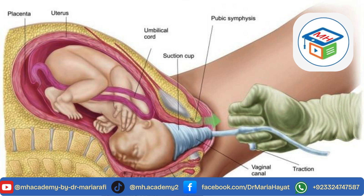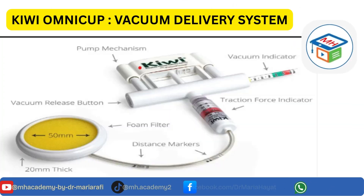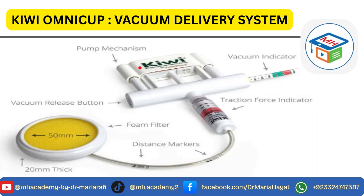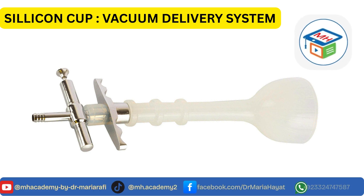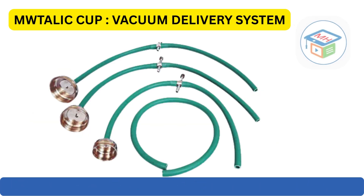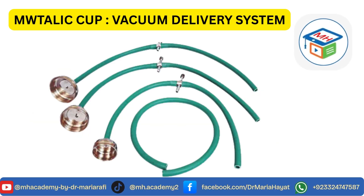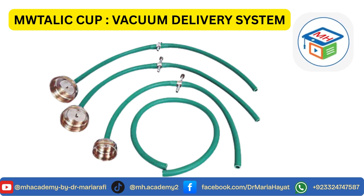The first examiner task is to ask you to identify the types of vacuum. You have to identify the types of vacuum on the station. This is the omni cup — you should know the parts of this, and the labeling is still there. In addition, this is the silicone cup and this one is the metallic cup. Each time they had this station, students didn't know that this is the vacuum, so you should know that.